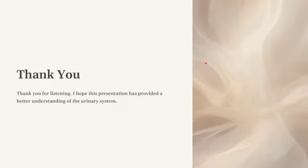To do a quick recap: the urinary system plays a crucial role in maintaining our body's internal environment by filtering the blood, regulating fluids and electrolytes, and excreting waste. Understanding this system not only highlights its importance but also sheds light on many health conditions related to kidney function. If you found this video informative, please give it a thumbs up, subscribe for more content, and hit the notification bell.